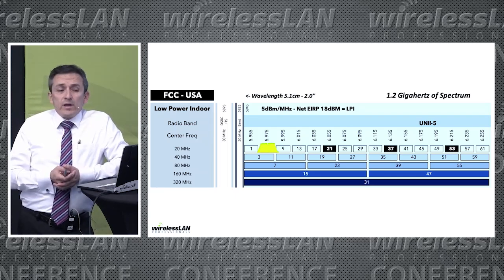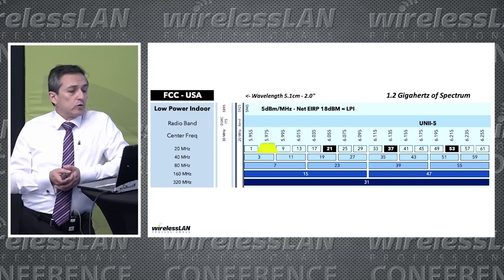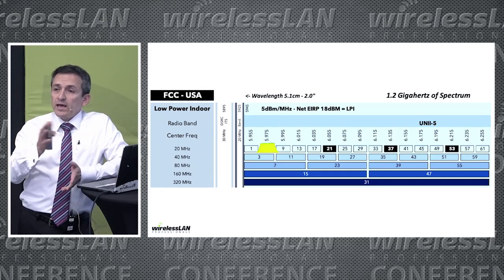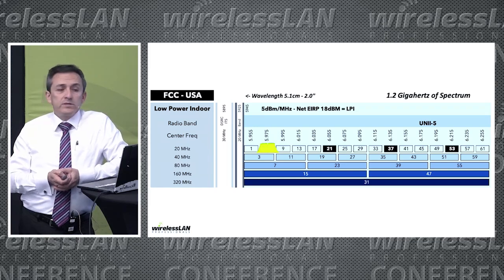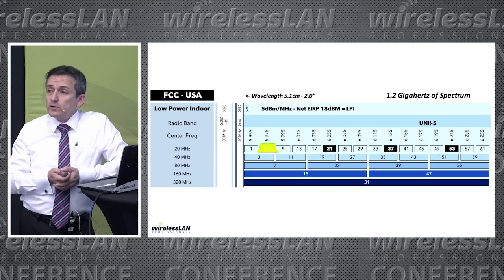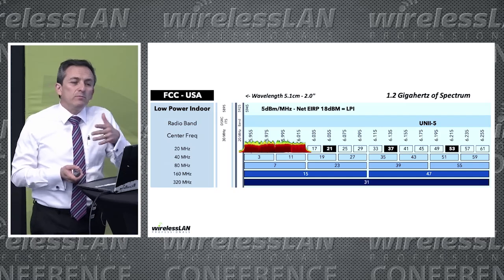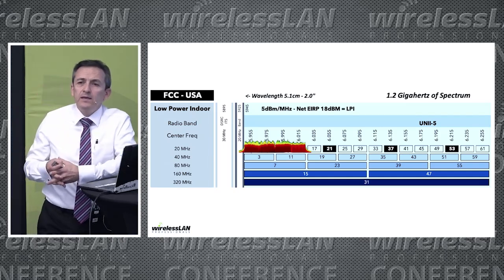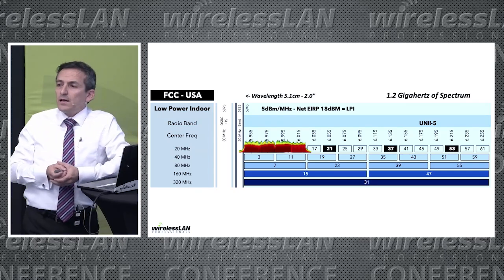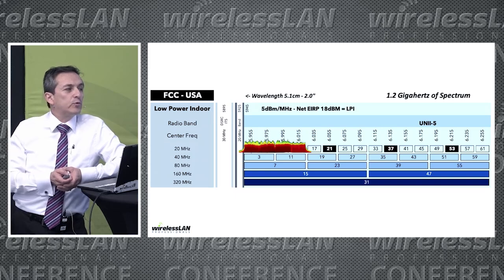Since primary channels are the ones carrying all the management and control frames, devices will only scan those preferred scanning channels, reducing scanning time. If you're doing an 80MHz wide transmission, energy will still bleed side to side, but all management is still on the primary. I initially believed PSC was synonymous with primary channel — and I was wrong.